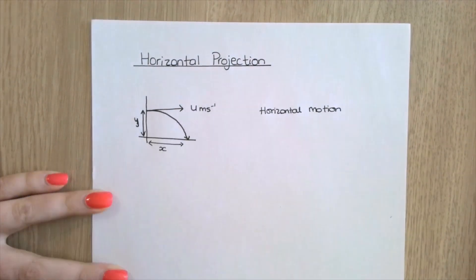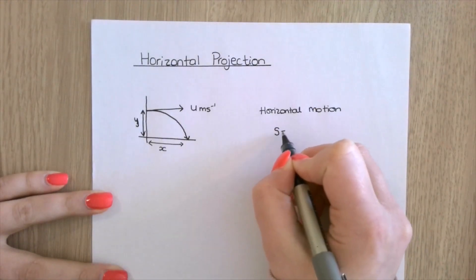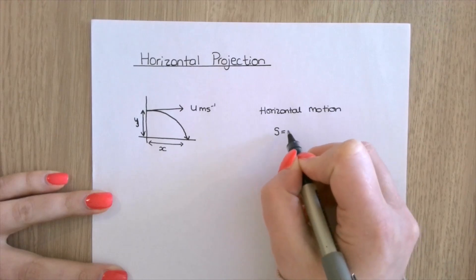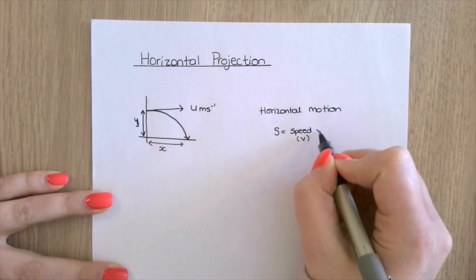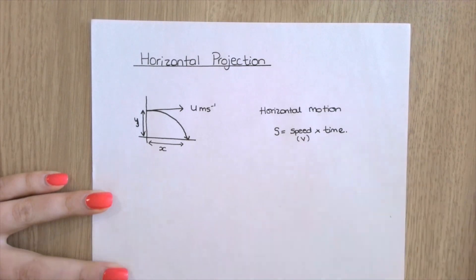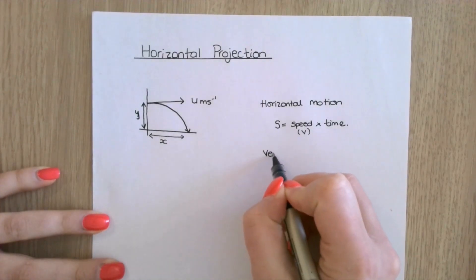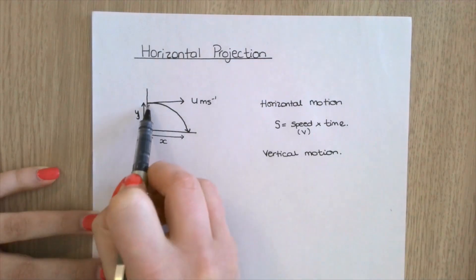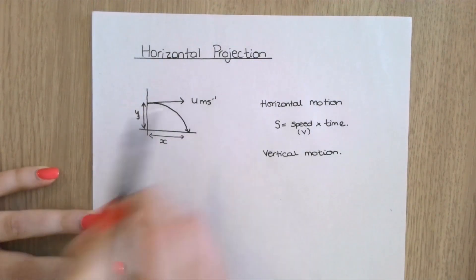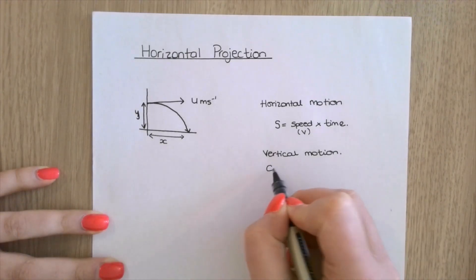The horizontal motion is modelled as constant velocity, and the displacement is s = vt - there's no acceleration. For vertical motion, the particle is acted on with constant acceleration due to gravity. We need to work out the horizontal and vertical motion separately.